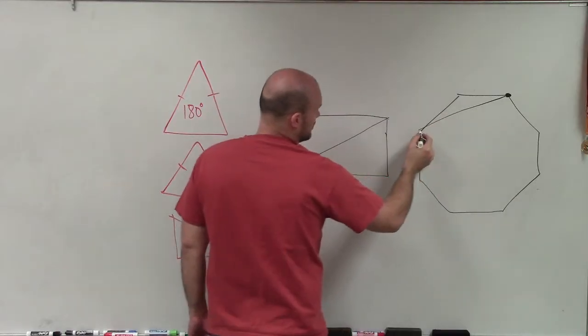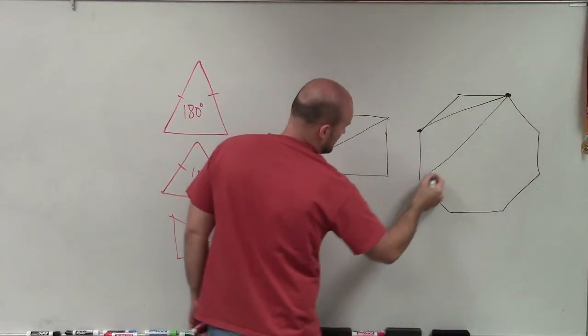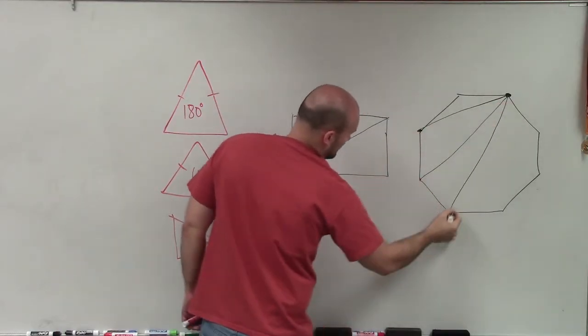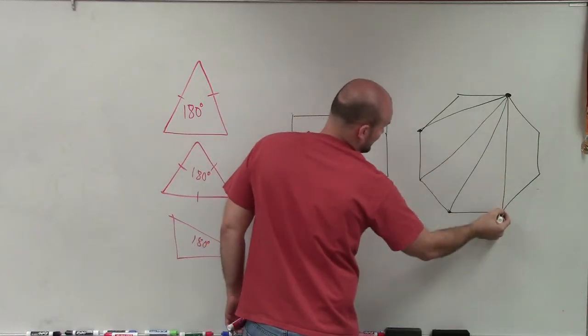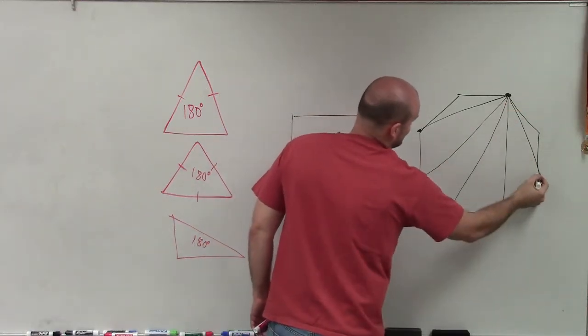Here, I can draw a line to this vertex, line to this vertex, line to that vertex, line to that vertex, and a line to that vertex.